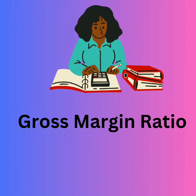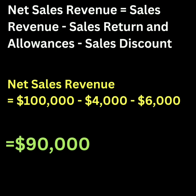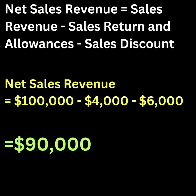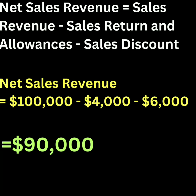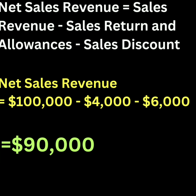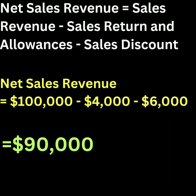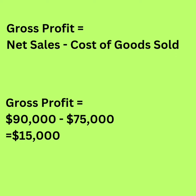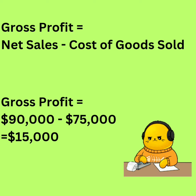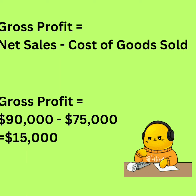Let's compute the gross margin ratio. First, we will calculate net sales revenue, which equals sales minus sales returns and allowances minus sales discount — that is $100,000 minus $4,000 minus $6,000 — which equals $90,000.